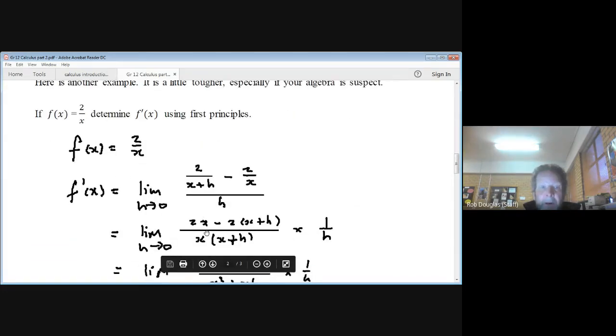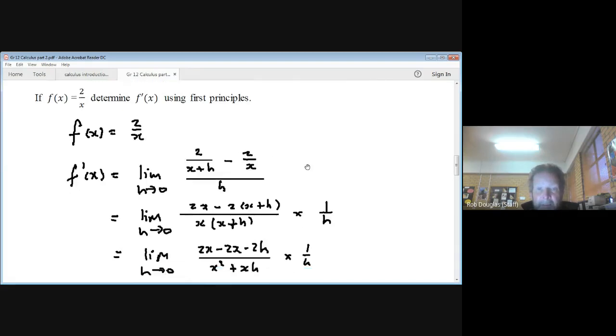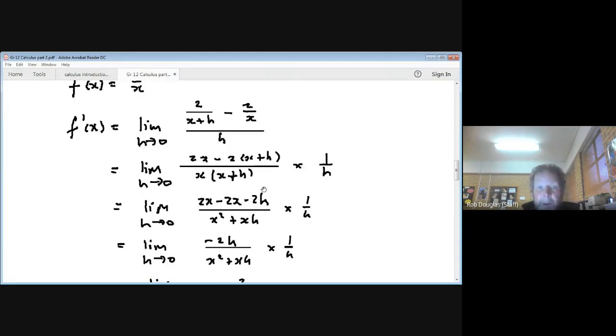Now, this one's a little tougher. It says f of x equals 2 over x. Okay, so we put it down. Well, the first step's pretty easy. f of x plus h. Instead of x, we put x plus h minus f of x, which is 2 over x. Well, that doesn't seem so bad. We get the first mark. It's pretty easy.